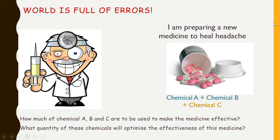Now let us consider another example. A doctor is preparing a new medicine that will heal headaches. With his expertise he knows that chemical A and chemical B are going to play a pretty good role in curing headaches. He has also found that chemical C also acts very well in curing headaches. However, the problem with chemical C is that it suppresses the effect of chemical A to some extent. The important question is: how much of chemical A, B, and C are to be used to make the medicine effective, and in what quantity should these chemicals be used so that the effectiveness of the medicine will be optimized?